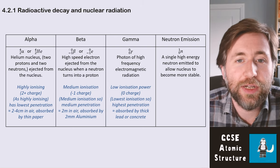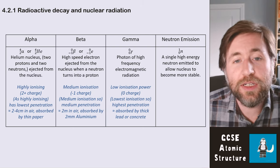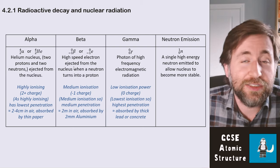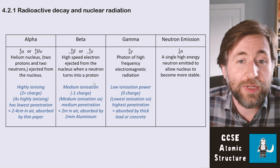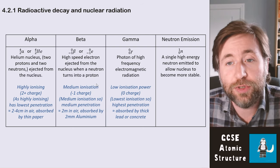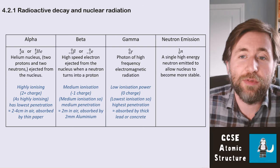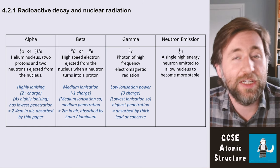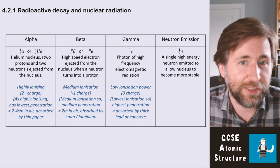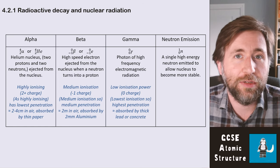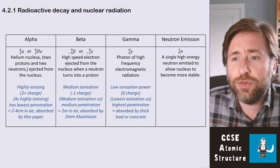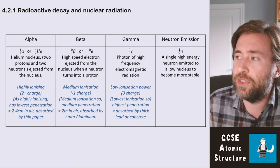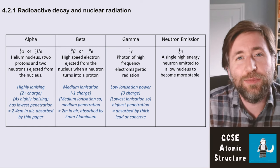A beta particle is a high-speed electron ejected from the nucleus when a neutron turns into a proton. A gamma ray is a photon of very high frequency electromagnetic radiation given out by the nucleus.